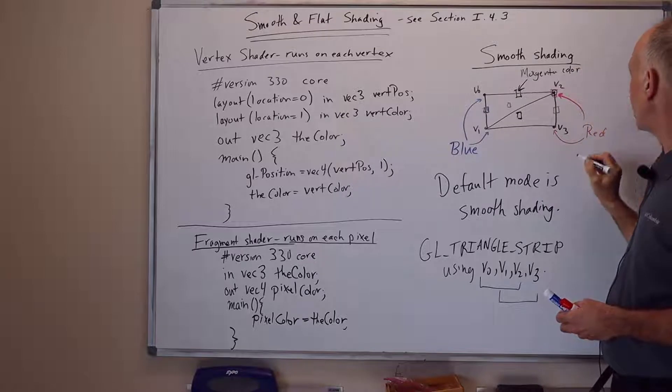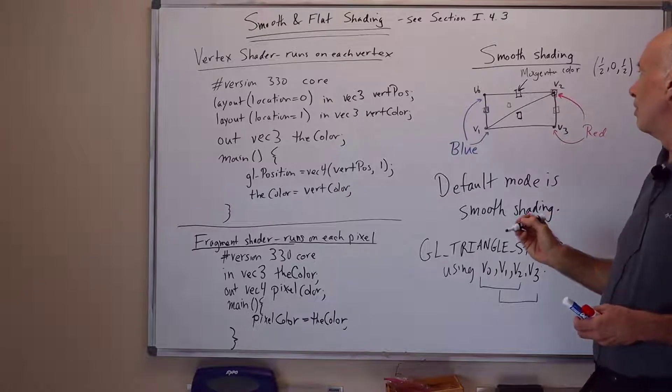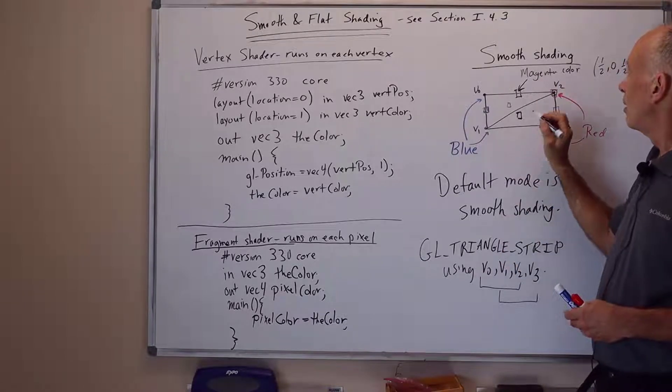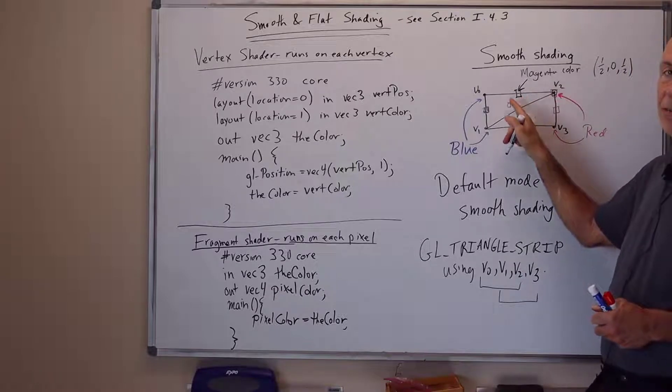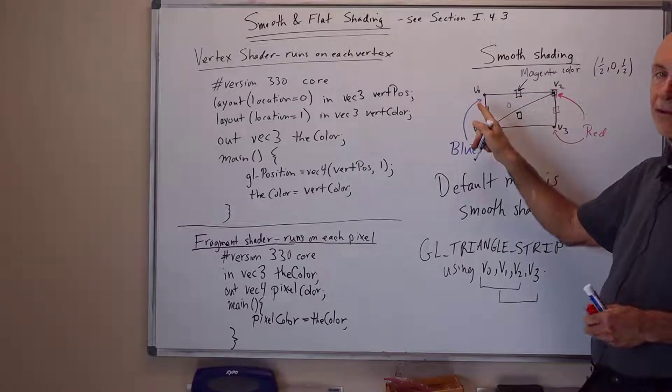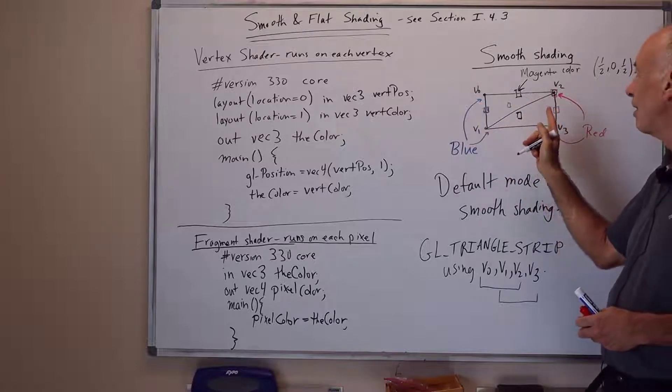Magenta is one-half, zero, one-half. It's a sort of a dark magenta color, since it's not bright magenta. The reason being that pixels in this center column are going to be an average of one-half the color of the pixels from the left-hand side, and one-half the color of the pixels from the right-hand side.